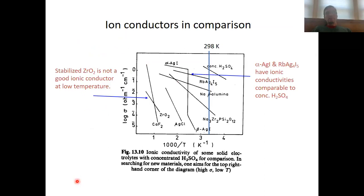Here you see an overview of how different ion conductors vary in conductivity as a function of temperature, benchmarked against concentrated sulfuric acid, which has a conductivity of about one siemens per centimetre at room temperature. The logarithm of the conductivity is plotted against 1000 over temperature, so here a value of 1 would mean 1000 Kelvin and 2 would mean 500 Kelvin.